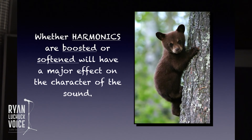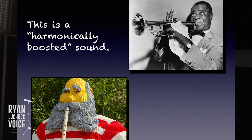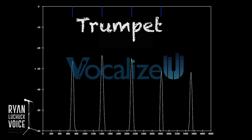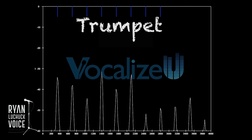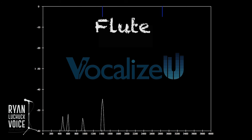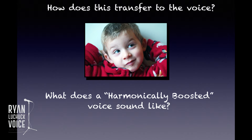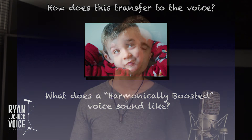I mentioned that the ear perceives harmonics as character. What I mean is that if harmonics are boosted or softened — depending on how much power is in a harmonic — it will have a major effect on the character of the sound you're listening to. For example, the trumpet is a harmonically boosted sound; there's a lot of power in the upper harmonics of a trumpet. The flute — that is not the case. Let's look at a spectrum analysis. Look at the upper harmonics of a trumpet — some actually have more power than the fundamental. On the other hand, the fundamental frequency of a flute is usually the strongest sine wave.